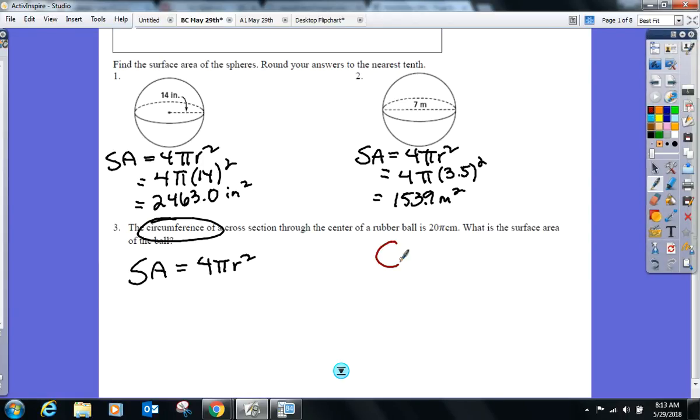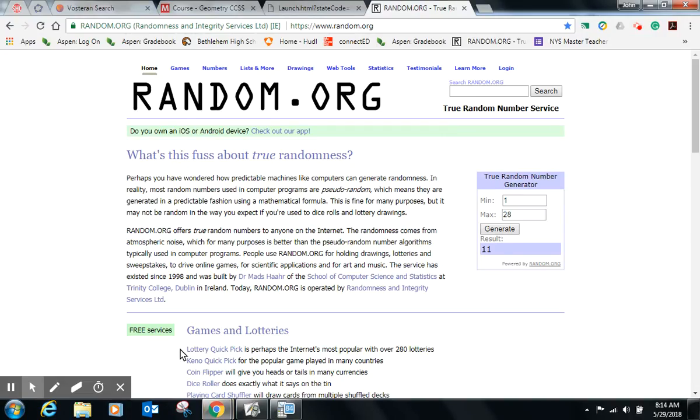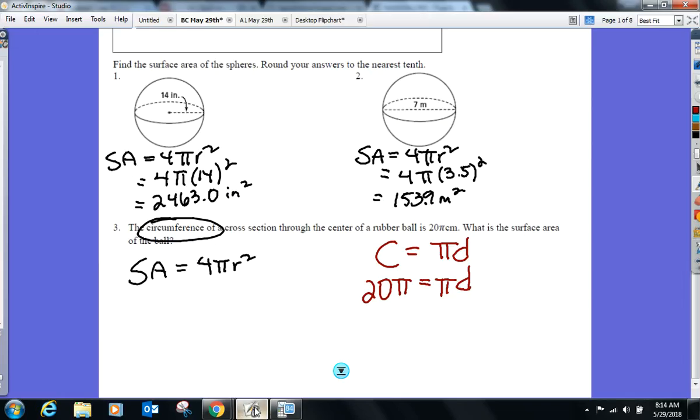So going back to a couple of units ago, anybody remember the circumference formula? Pi d. Does it have radius in it? No. But it's got what? Which we can get the radius from? Diameter. So circumference 20 pi. You guys are trying to solve for the diameter. What's going to happen here on both sides? So the diameter is going to end up being 20.